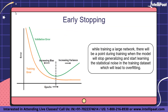Next, we have early stopping. During training a large network, there will be a point when the model stops generalizing and starts learning the statistical noise in the training data set. This overfitting of the training data results in an increase in generalization error, making the model less useful for predictions on new data. As the number of iterations increases, the training error decreases and the model enters the zone of overfitting, making vague predictions on new unseen data.